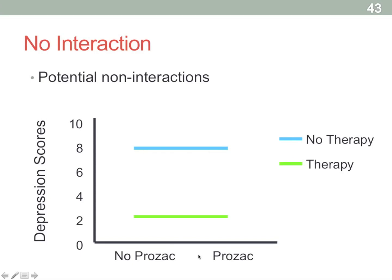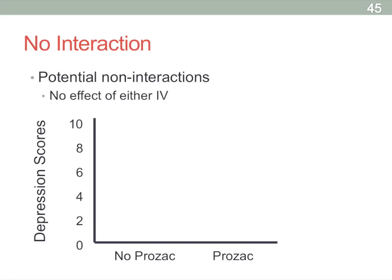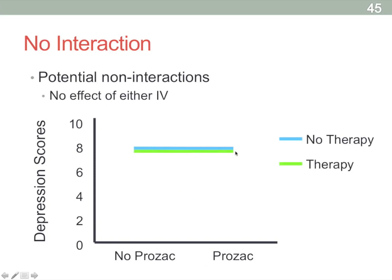If the two lines are literally on top of each other — no difference between therapy and no-therapy groups — but there's a big difference with medication, that's a main effect of Prozac with no effect of therapy and no interaction, because the lines are parallel. If there's no effect of either independent variable, you'd see a flat line with the two lines right on top of each other — no difference between therapy and no-therapy, no difference between no-Prozac and Prozac, and no interaction because lines are perfectly parallel.